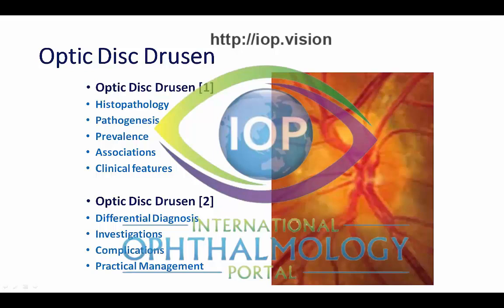The first lecture, Optic Disc Drusen 1, covered histopathology, pathogenesis, prevalence, associations, and some of the more characteristic clinical features. We're now going to drill down a bit deeper in Optic Disc Drusen 2 and look at this in the context of the main differential diagnosis, investigations, and most importantly, the complications associated with Optic Disc Drusen, and then some practical management thoughts on what we can do to help people who have this condition.